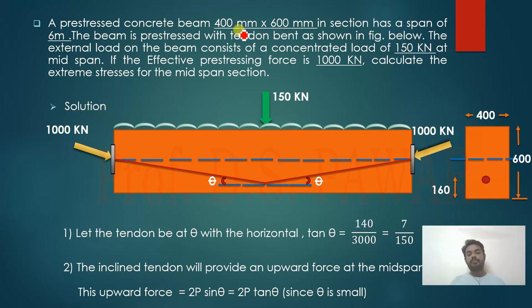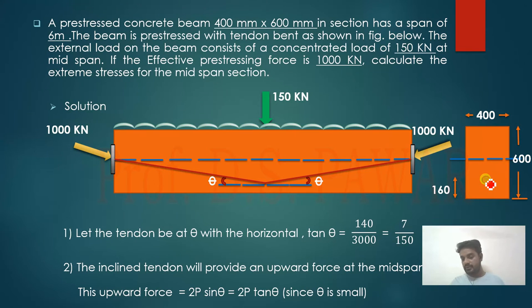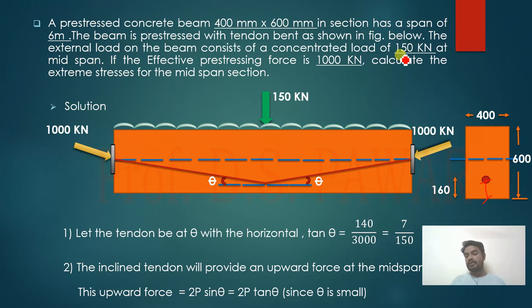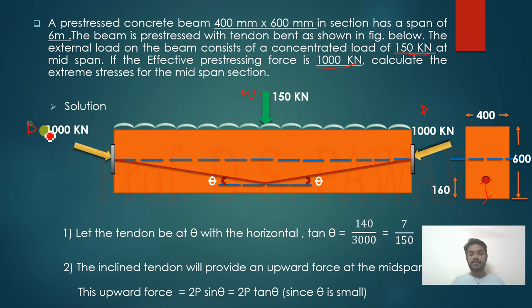Problem: A prestressed concrete beam 400 mm × 600 mm in section has a span of 6 meters. The beam is prestressed with a bent tendon as shown. The tendon is provided at a distance of 160 mm from the bottom. The external concentrated load W = 150 kN at mid-span, and the effective pre-stressing force P = 1000 kN. Calculate the extreme stresses at mid-span.